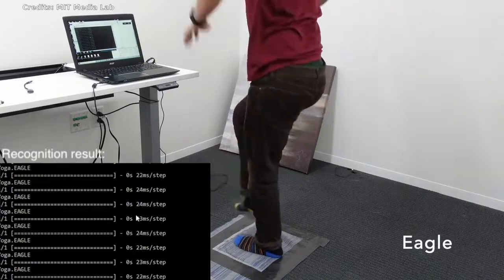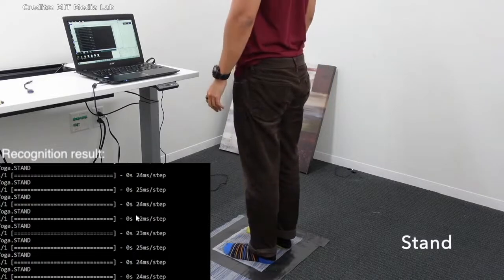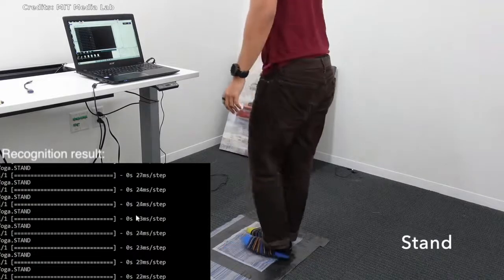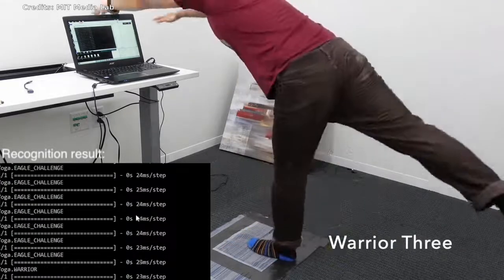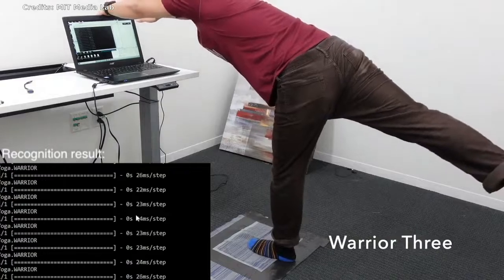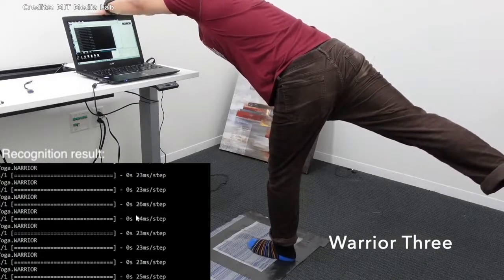But yarn is soft and pliable, so the layers shift and rub against each other when the wearer moves. This generates noise and causes variability that make the pressure sensors much less accurate.